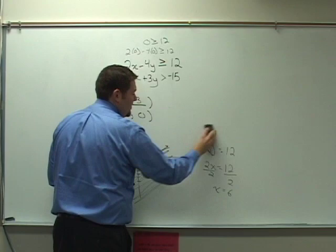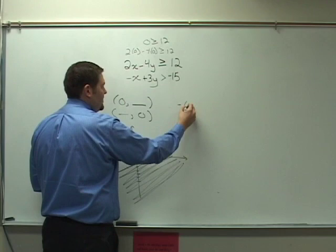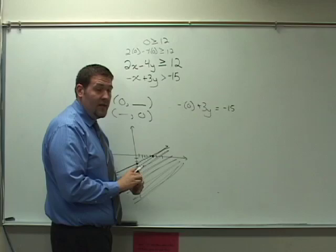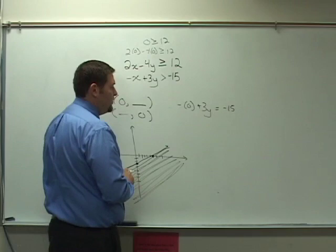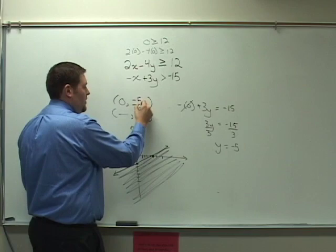I'm going to erase the work right here and do the same information for the second inequality. So starting with my x equals zero in the second equation now, I have negative zero plus three y is equal to negative fifteen. Again, remembering that I'm using the equality here, we will come back to the inequality, but for making the line, we need to set it equals two. This goes to zero, it leaves me with three y equals a negative fifteen. If I divide both sides by three, I find that y is equal to a negative five. It goes right there.